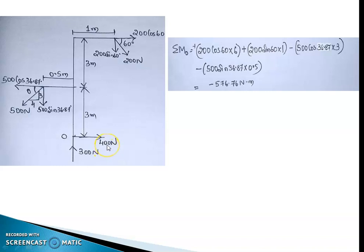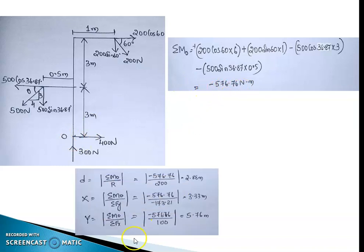The moments due to 300 newton and 400 newton are zero, because moment equals force times perpendicular distance — these forces start from the origin and the perpendicular distance to that point is zero, so the effect of these two forces is nil on the moment.